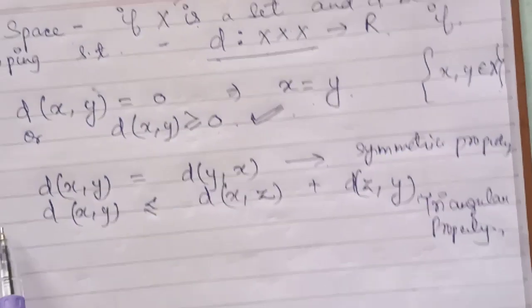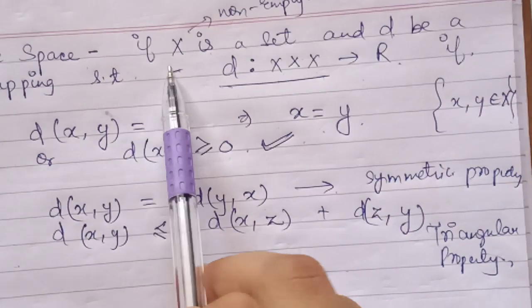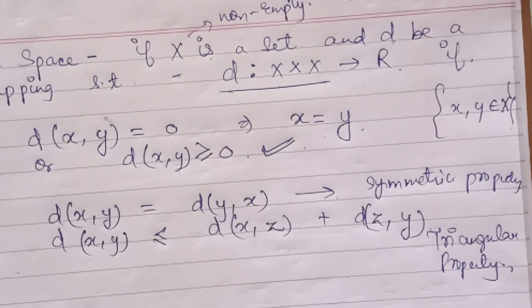So if all three conditions are satisfied, then X is called a metric space.